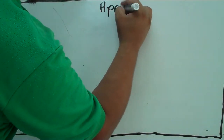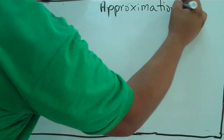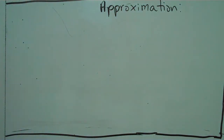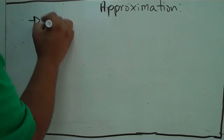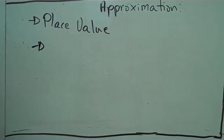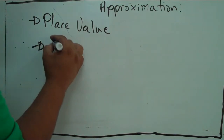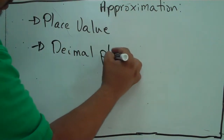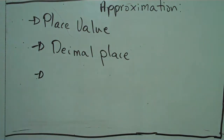Good morning, good afternoon, or good night — I'm not sure what time it is that you're watching this video — but today we want to be working a little bit in approximation. Under approximation, we want to work with three of the most common ones: the first is place value, the second is decimal place value, and the third is significant figures.